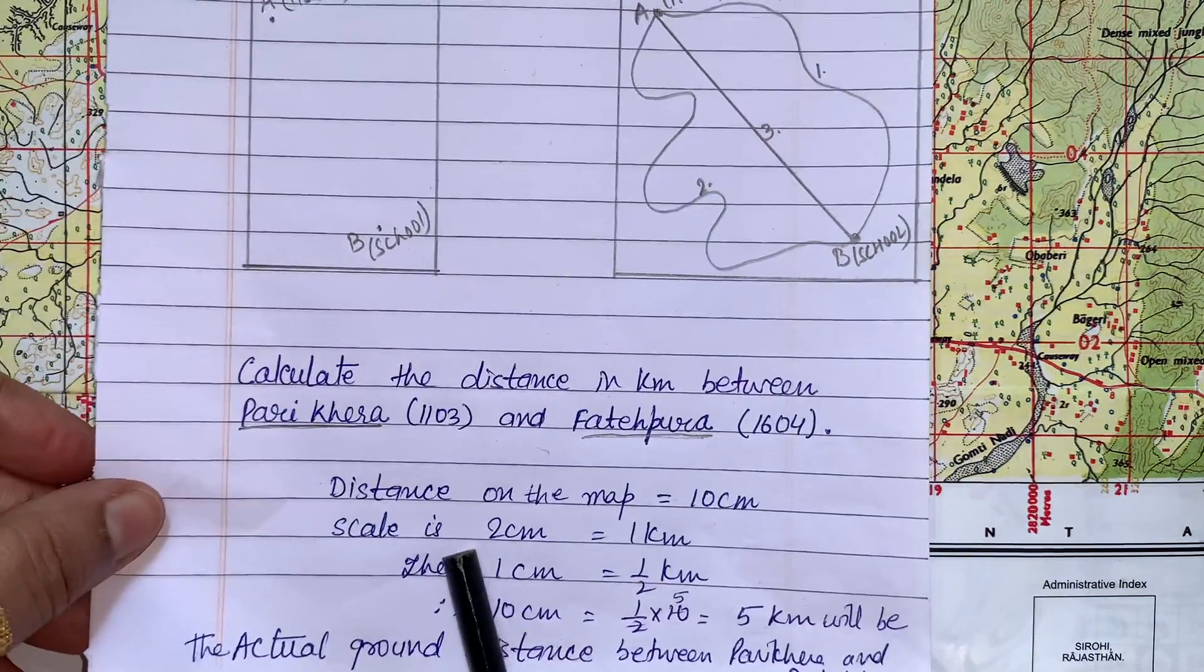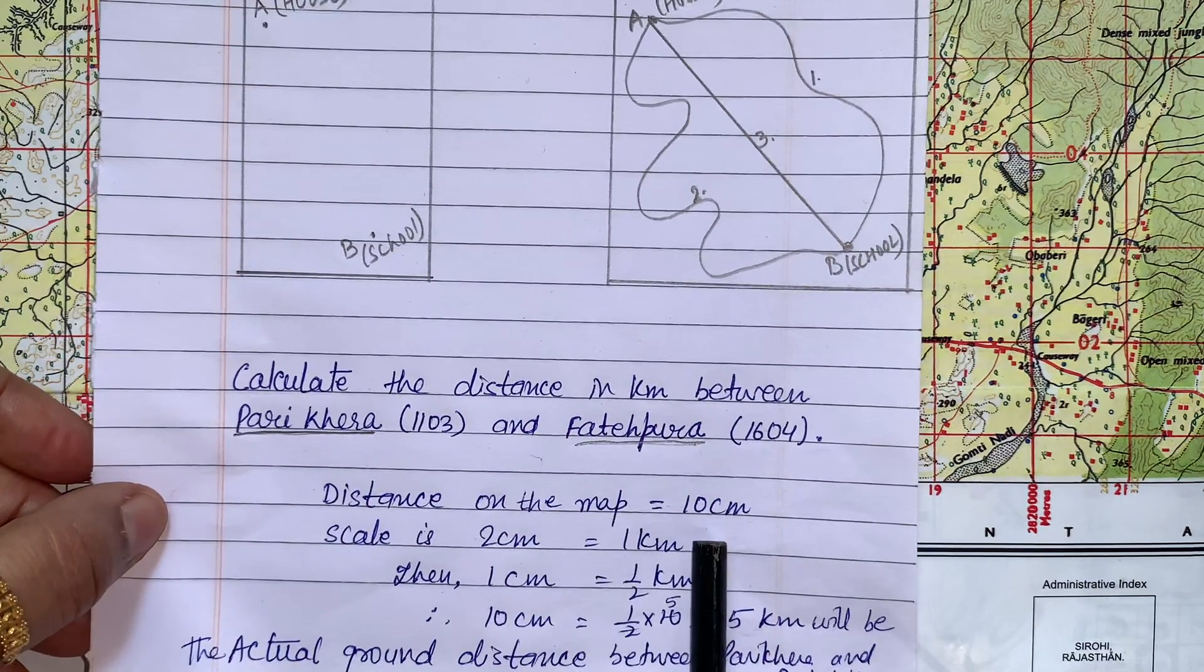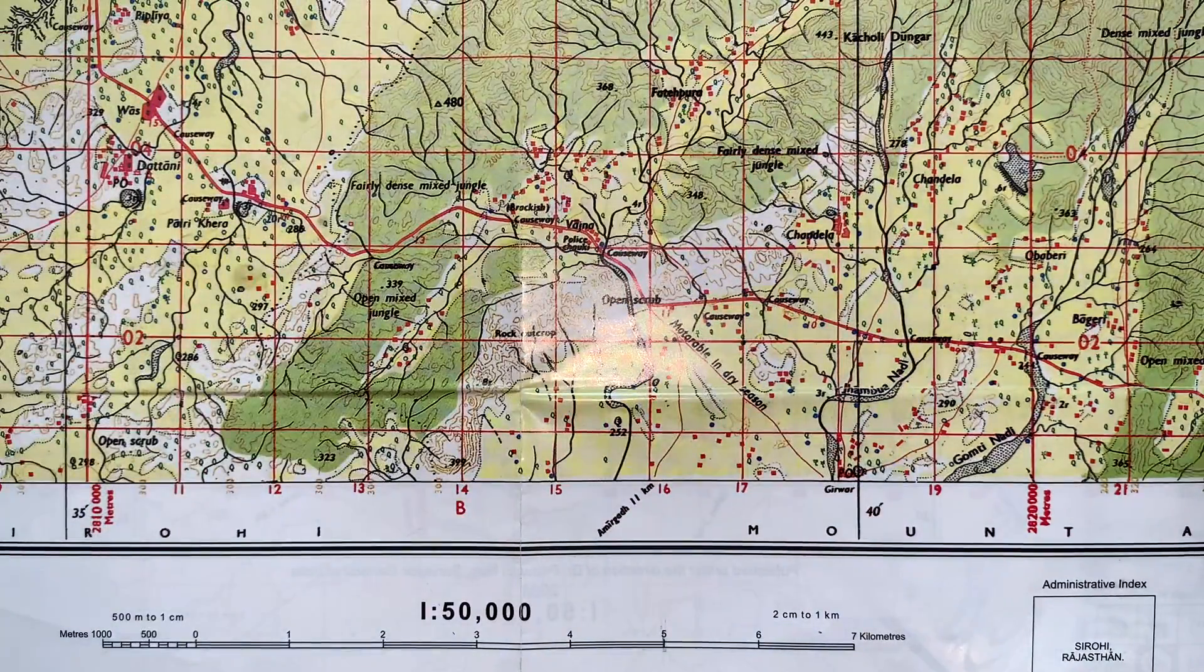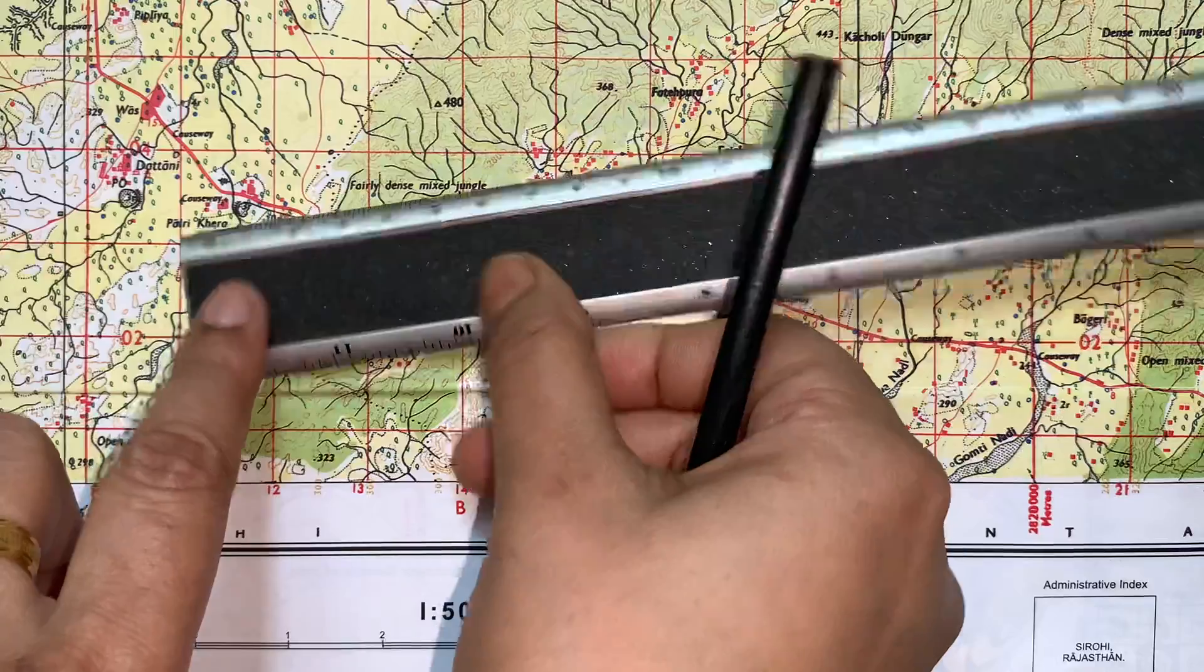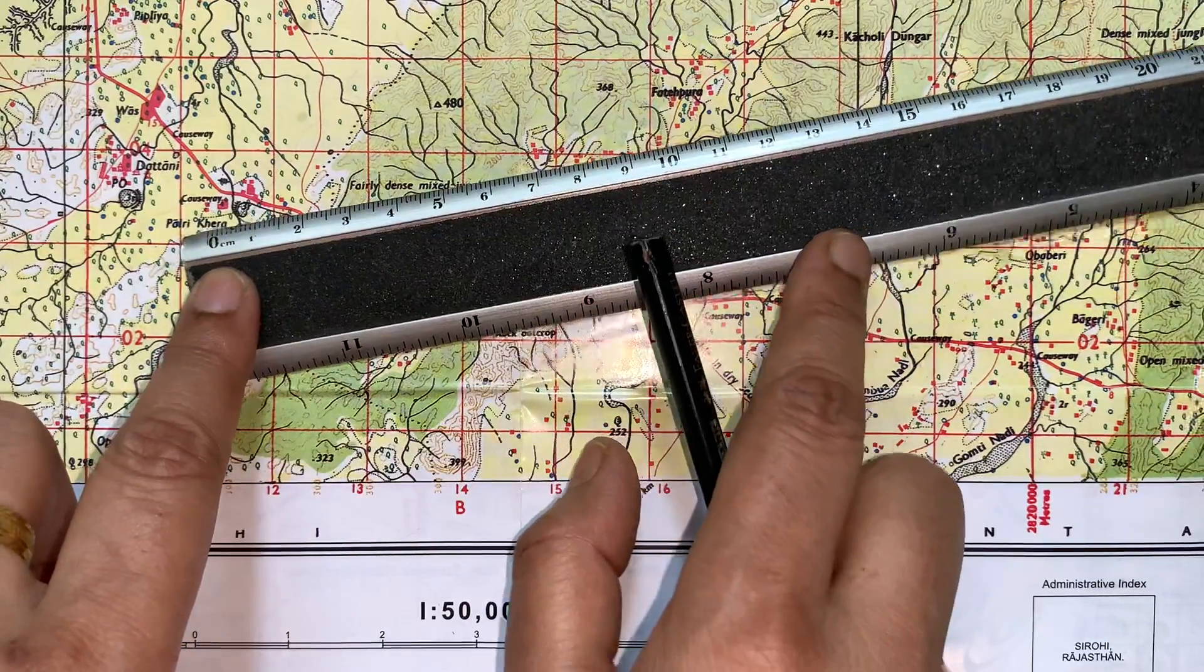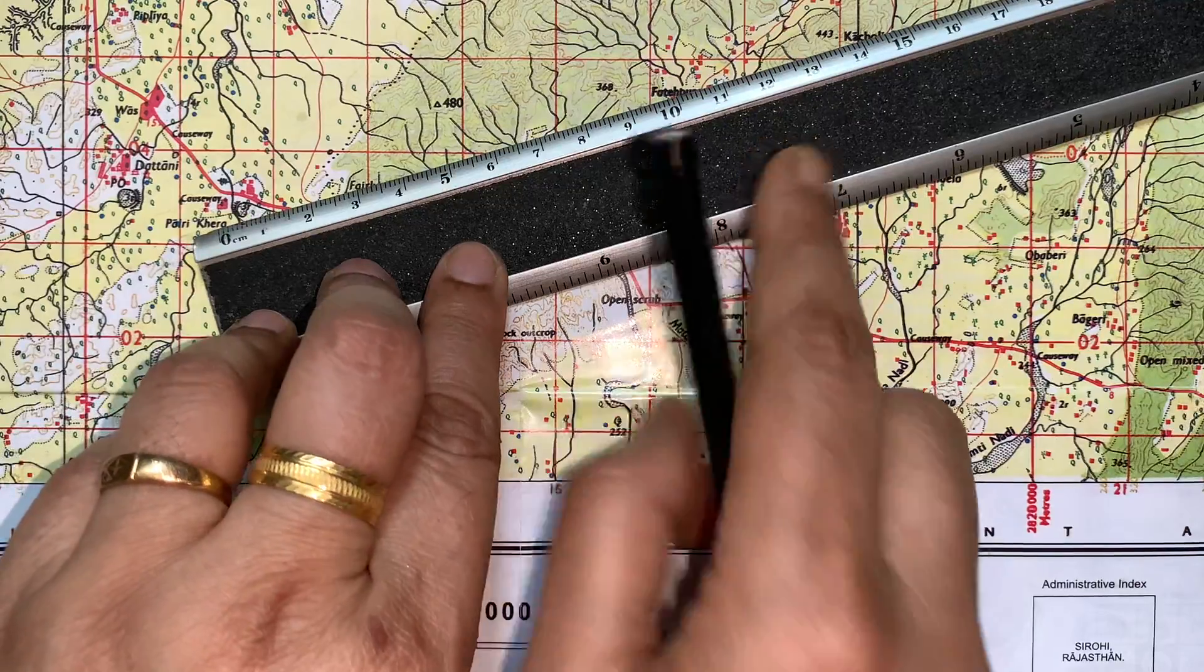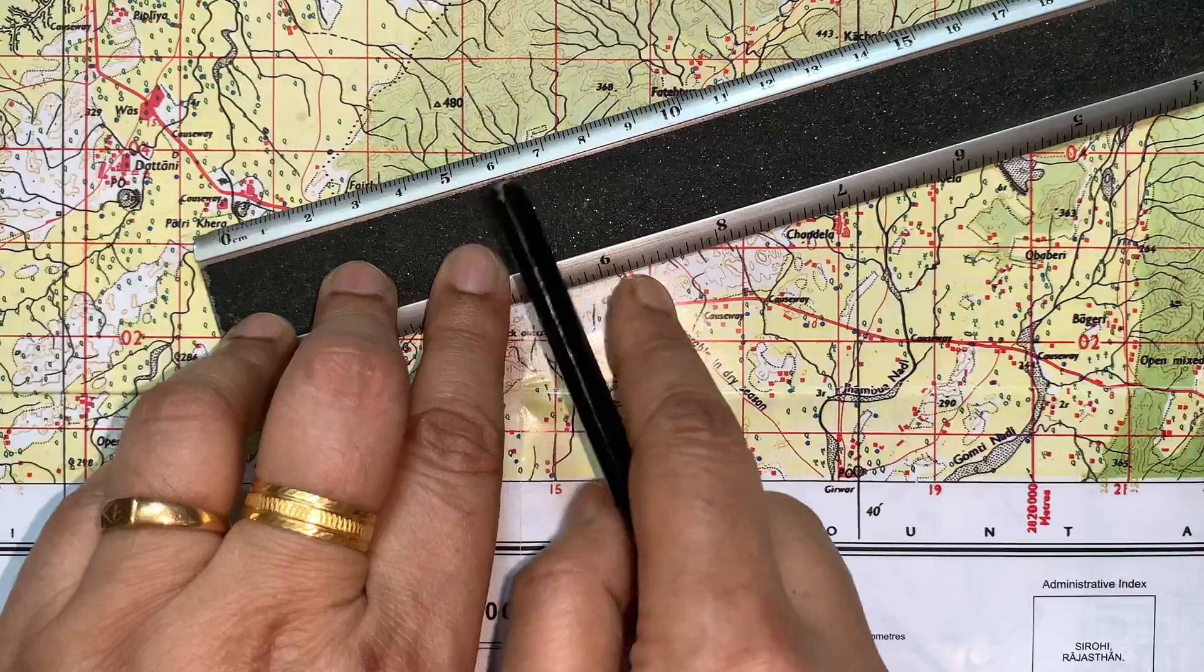In this case I have written here, distance on the map between Parikhera and Fatehpura is ten centimeters. Same thing we can do with the help of the ruler. In ruler, if you are using zero, we will keep it on Parikhera and we will take it to Fatehpura.